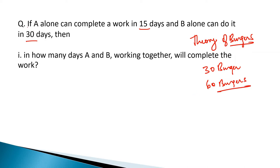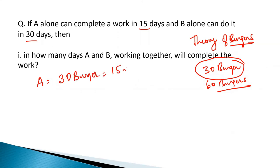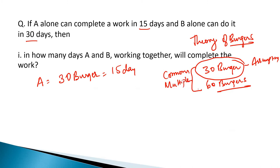If A alone can complete a work in 15 days, the work is nothing but 30 burgers — I have assumed this. So A can eat 30 burgers in 15 days. This is just an assumption. You can assume any value, but we are working with a common multiple because that makes our job more easy. You can work with a non-common multiple as well.